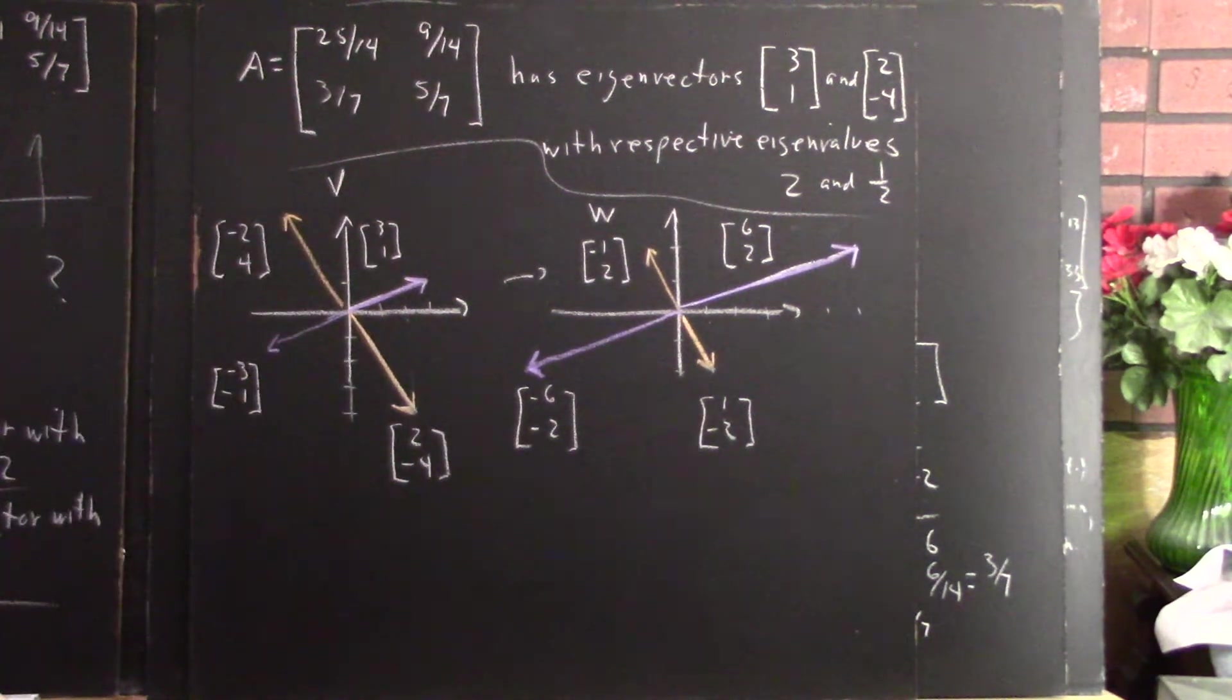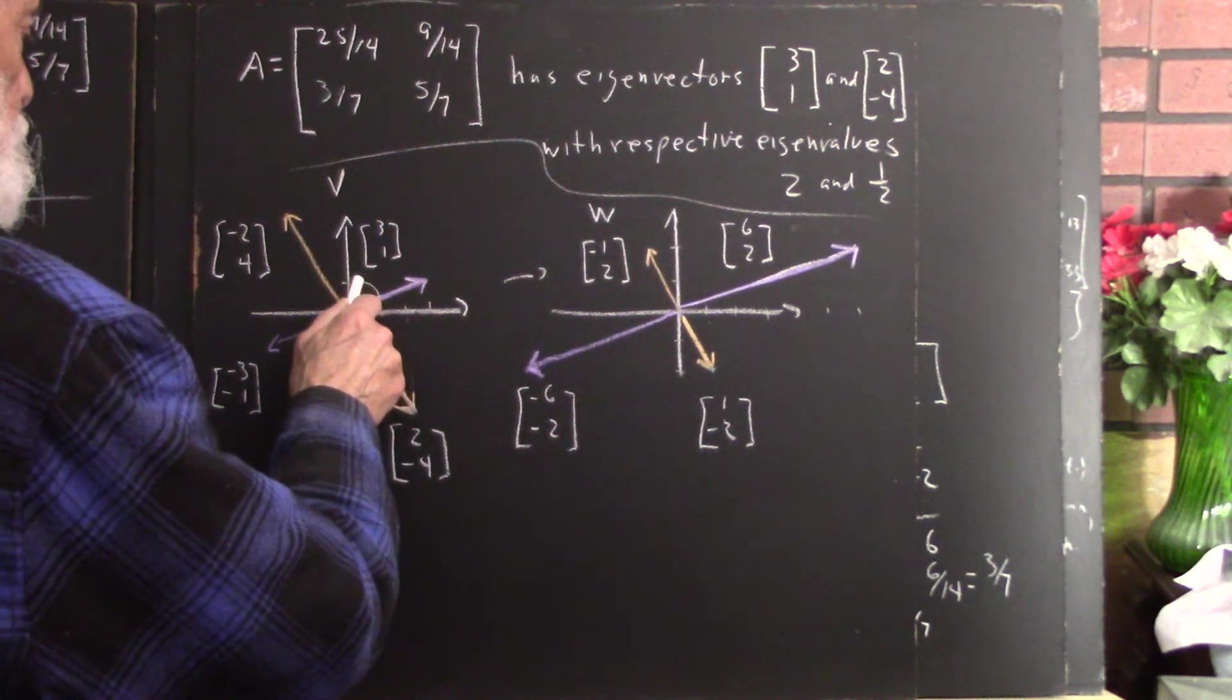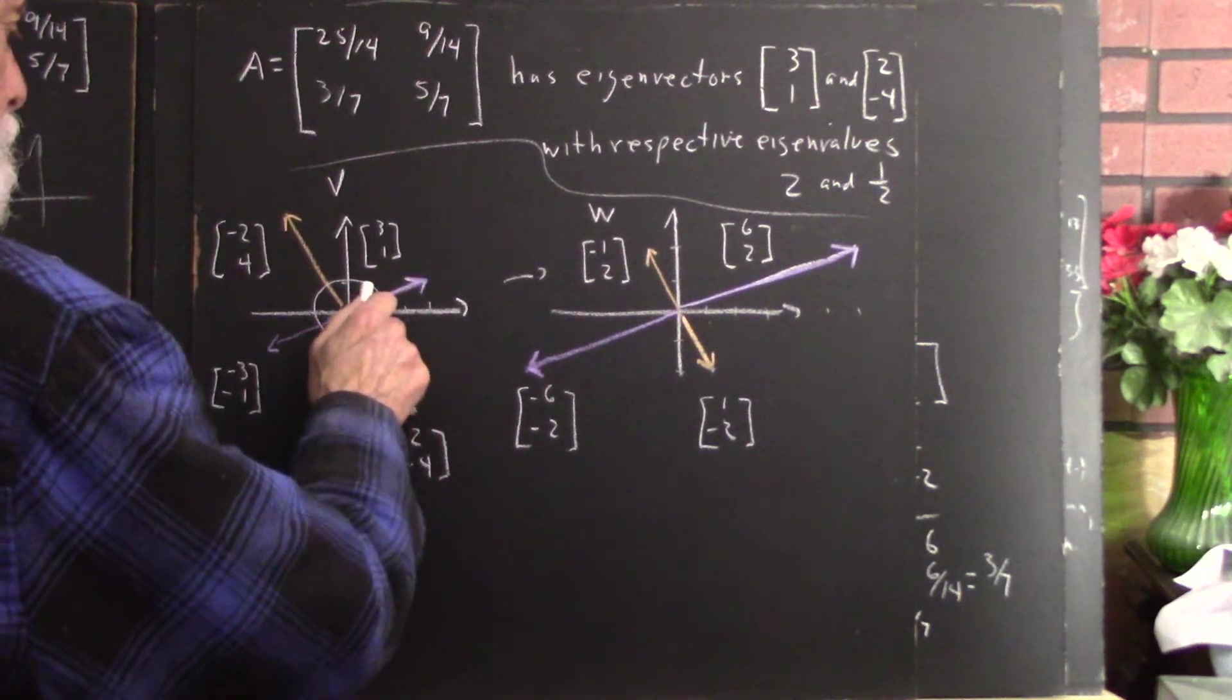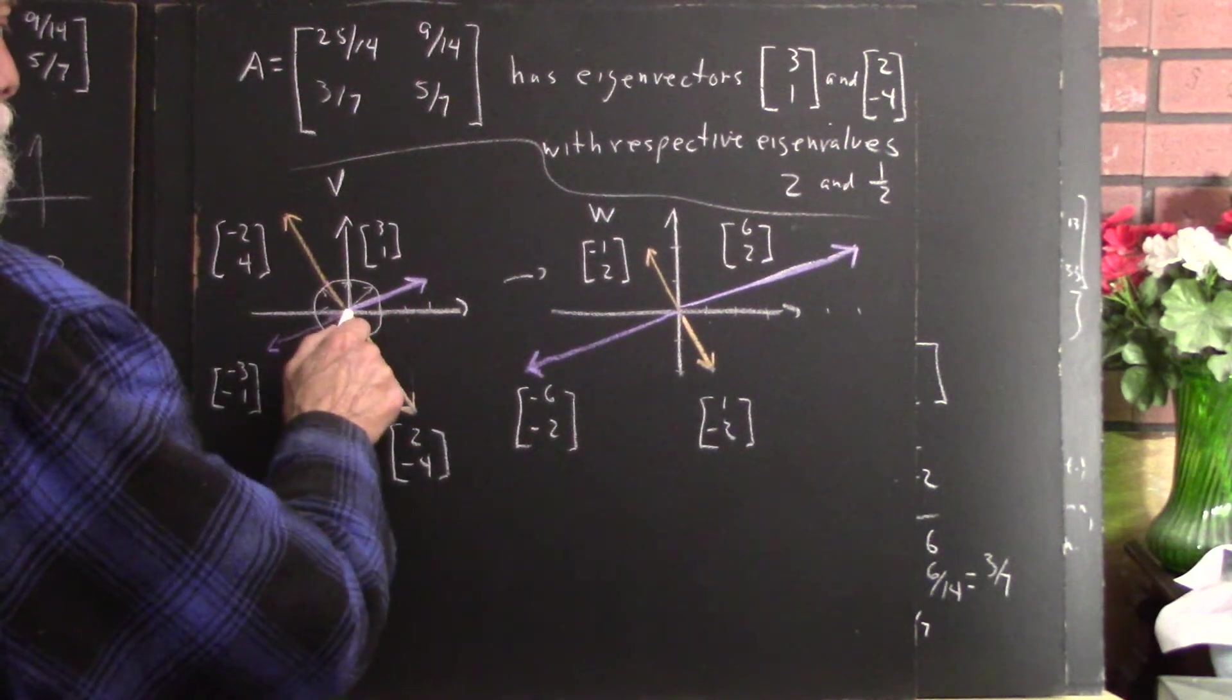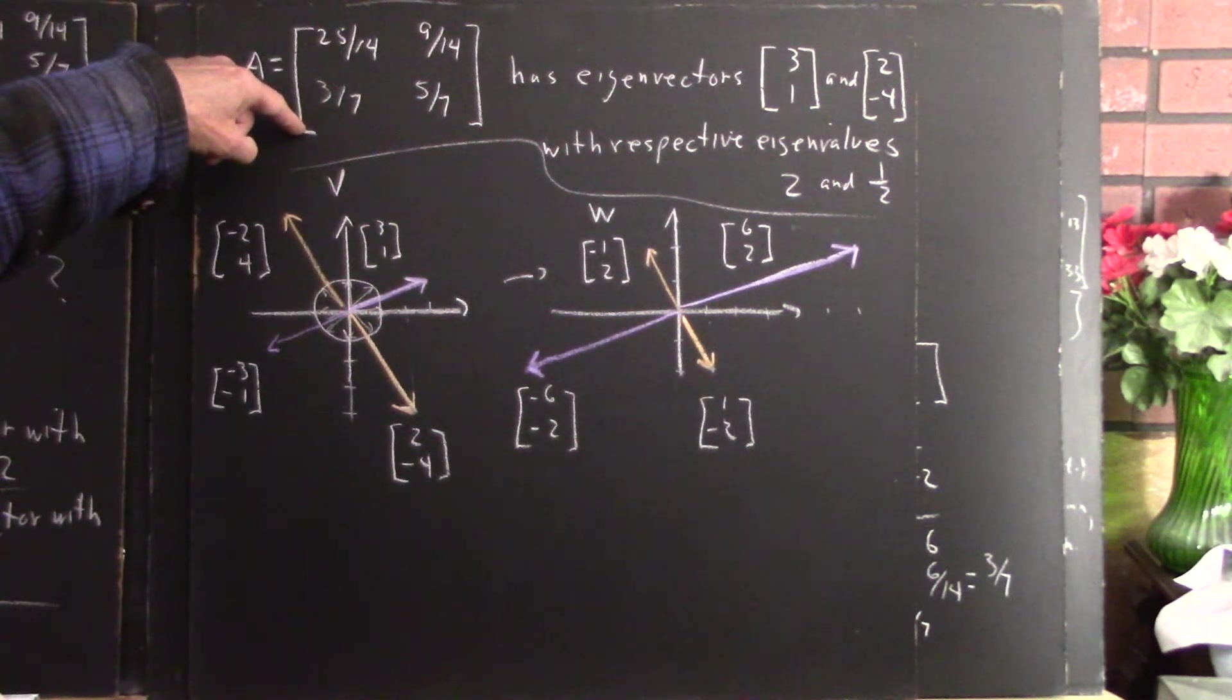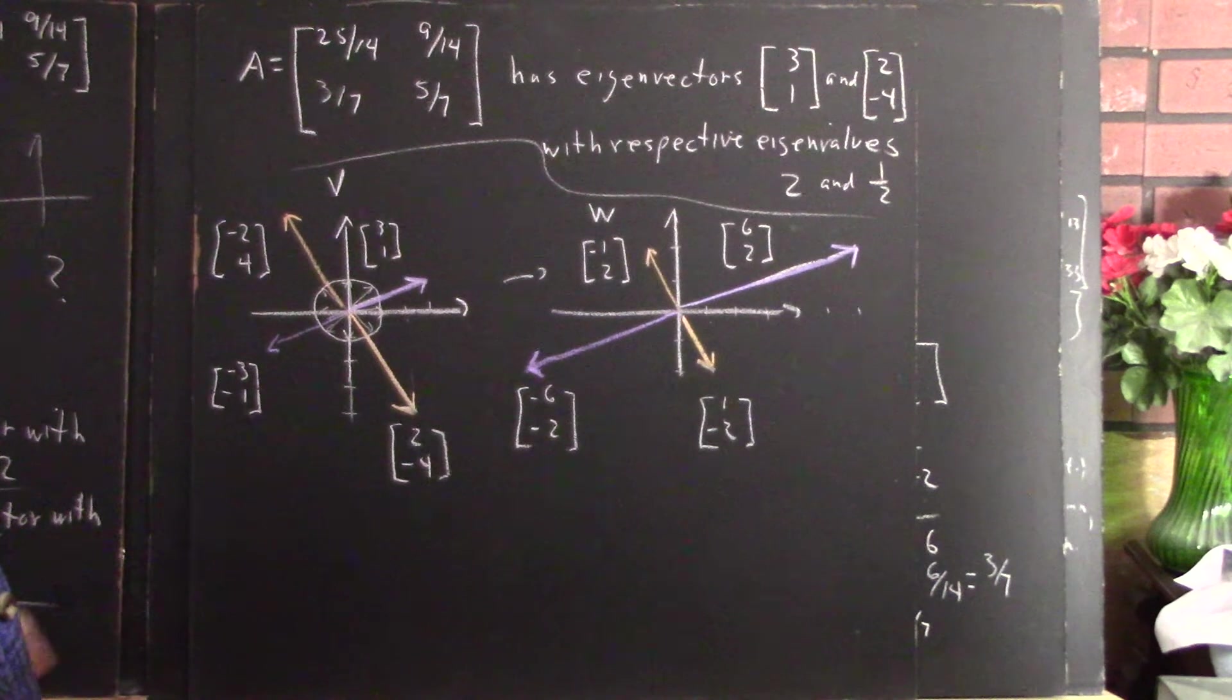What about the rest of the vectors in this space? Well, as we've often done, we can talk about vectors around the unit circle. So we could have a vector here, and a vector here, and a vector here, a vector over here, and so forth. We could transform all these vectors by this transformation and get a picture of what happens to this circle. Well that would be a really good exercise.